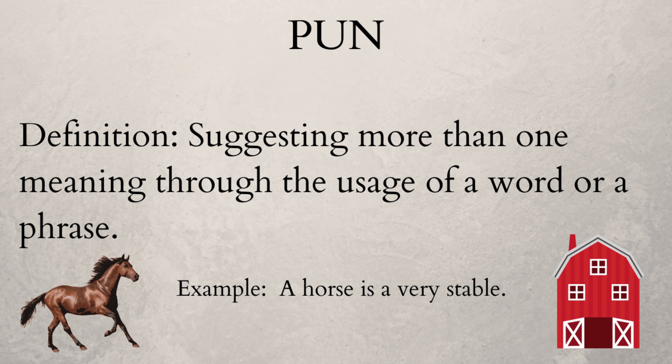A pun is the suggestion of more than one meaning through the usage of a word or a phrase. Looking at the example: 'A horse is very stable.' How can a horse be a very stable? Stable has two meanings — it can describe something as stable, but here it's used as a noun referring to where horses live. So the word 'stable' has two meanings, and that's why we're playing with words here — it's called a pun.